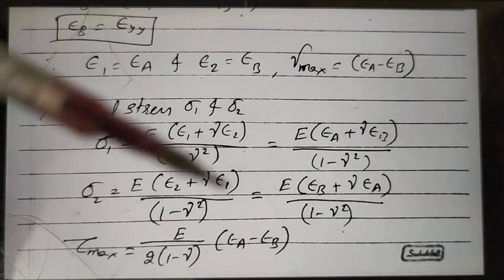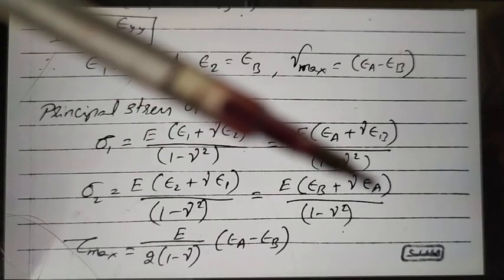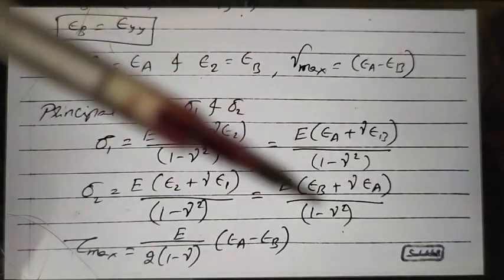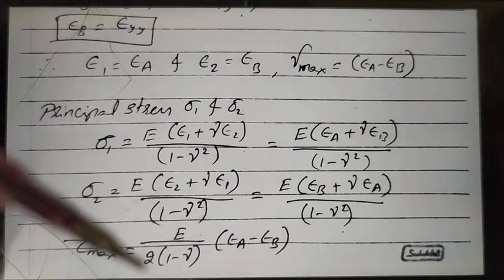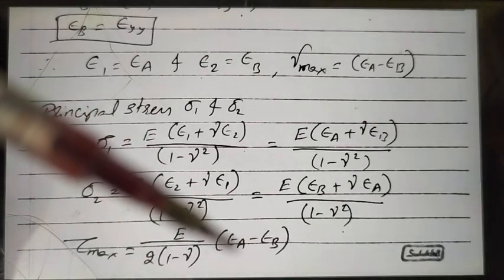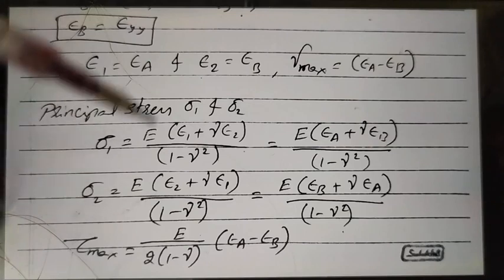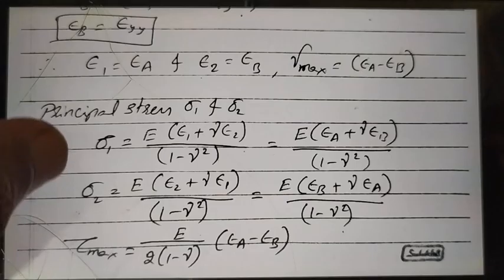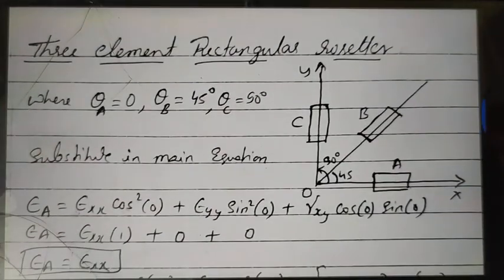For principal stresses, using the equation derived in the introduction: sigma_1 equals E(epsilon_1 plus nu·epsilon_2) / (1 minus nu²). Substituting epsilon_1 equals epsilon_a and epsilon_2 equals epsilon_b gives the equation for the two-element rectangular rosette. Similarly, sigma_2 is obtained by substituting epsilon_2 equals epsilon_b and epsilon_1 equals epsilon_a. The maximum shear stress tau_max equals E / (2(1 minus nu)) times (epsilon_a minus epsilon_b).